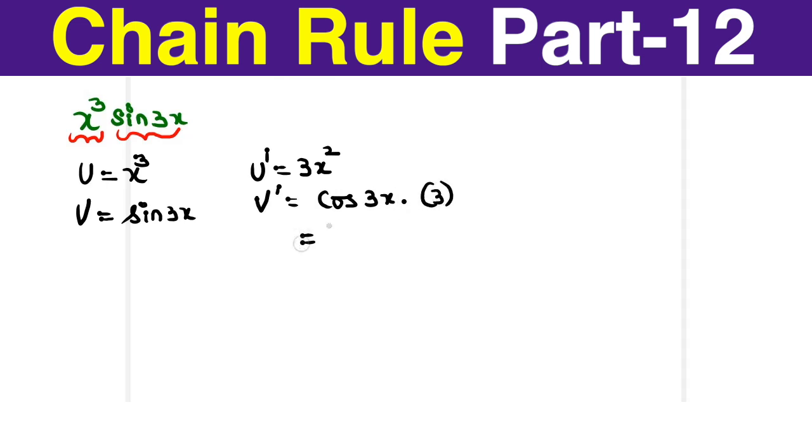Differentiation of sin t is cos t followed by differentiation of t. So I have a 3. V dash itself is 3 cos 3x.